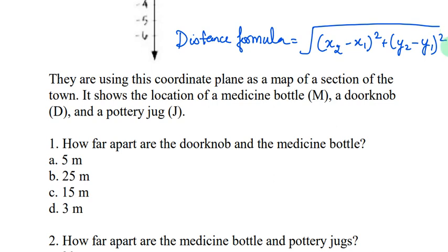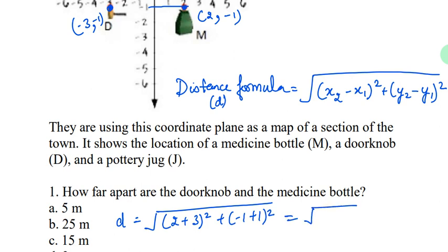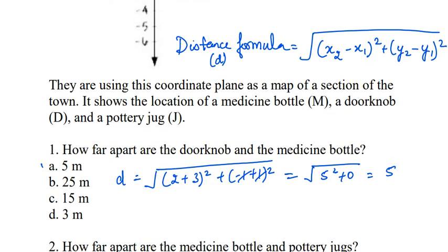We need to find the distance from doorknob D to medicine bottle M. D is equals to square root of, this is x1 y1 and x2 y2, so that would be 2 plus 3 whole square plus minus 1 plus 1 whole square. 2 plus 3 is 5 square, so square root of 5 squared, and these cancel giving 0 squared which is 0. So 5 squared and square root cancel, giving us 5. The correct answer is 5 meters.